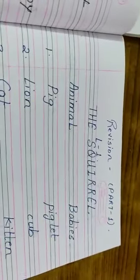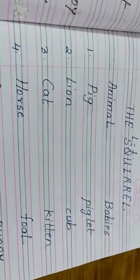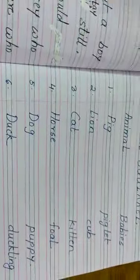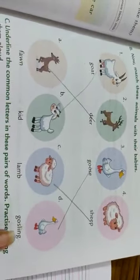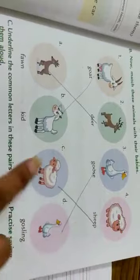This and animals and babies. Some more examples I have found for you. This. This is revision part 1. The squirrel. Lesson number 1. Animals and babies. You have already learned from the book. Here. Goat, kid. Deer, fawn. Goose, goosling. Lamb. Sheep, lamb.